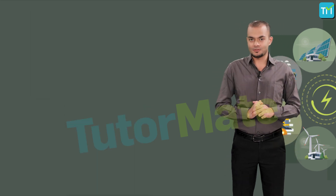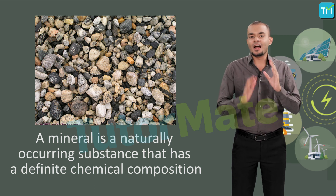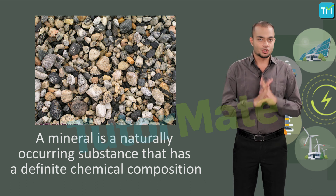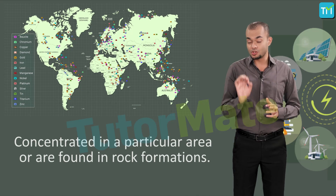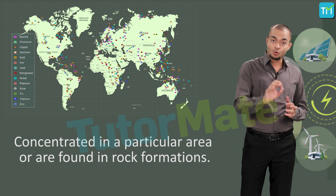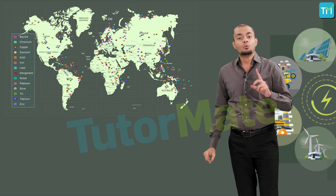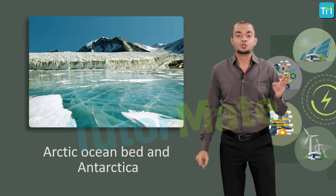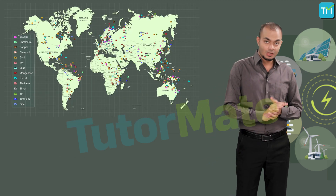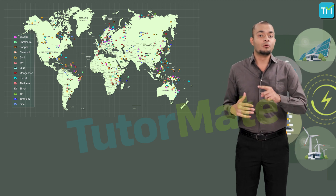Let's learn a little more about minerals. A mineral is a naturally occurring substance that has a definite chemical composition. Minerals are not evenly distributed over space — they are concentrated in a particular area or are found in rock formations. Some minerals are found in areas which are not easily accessible, such as the Arctic Ocean bed or Antarctica.